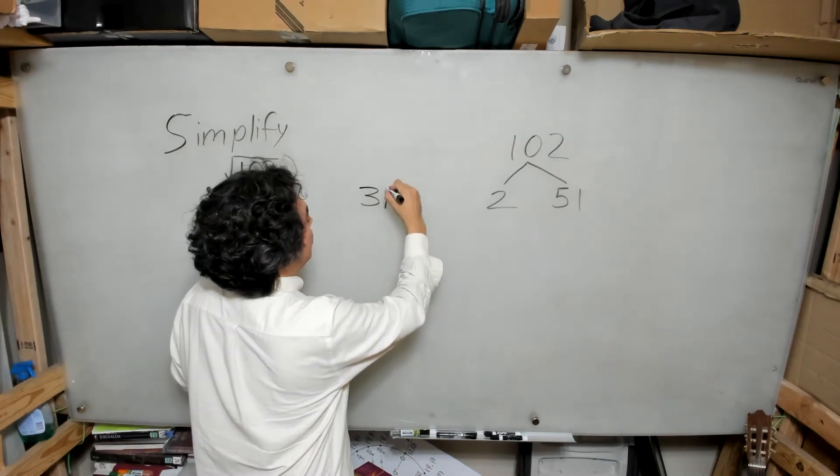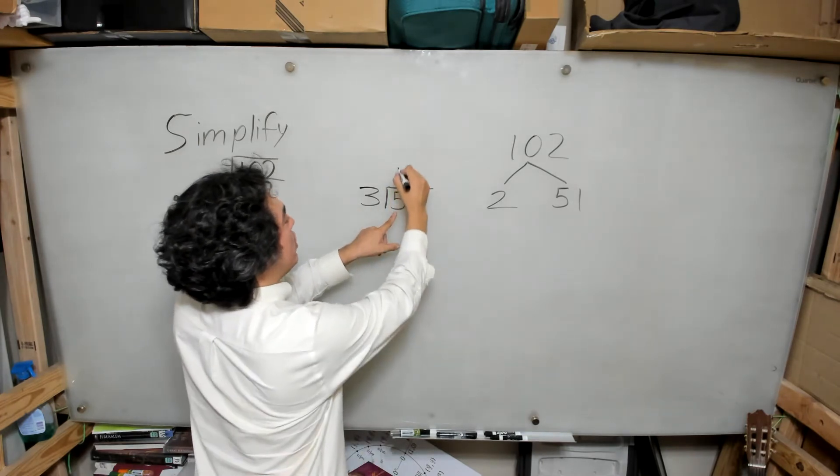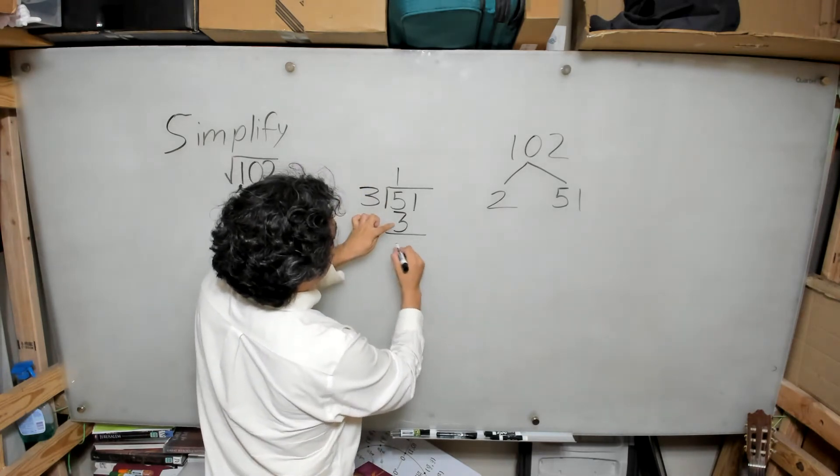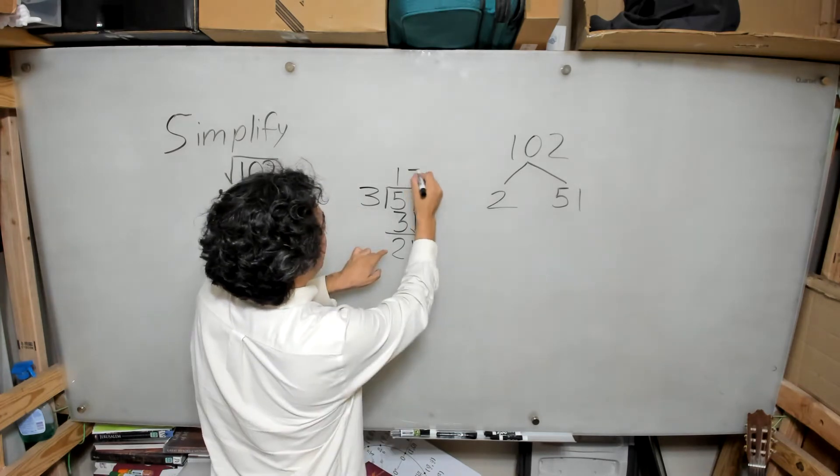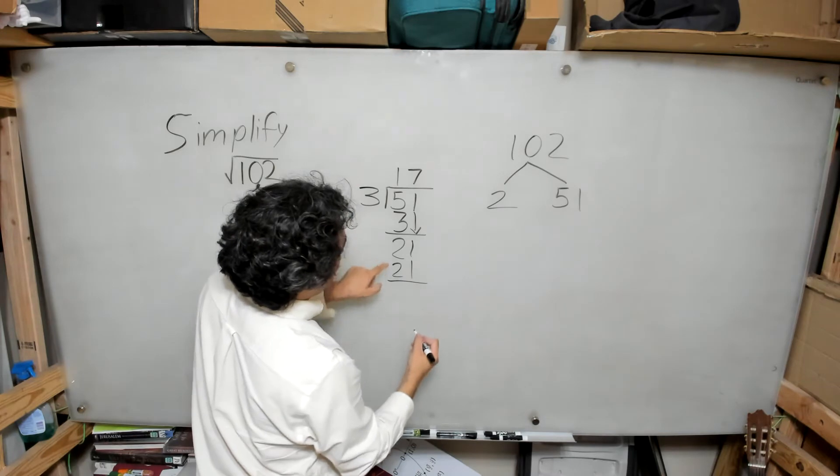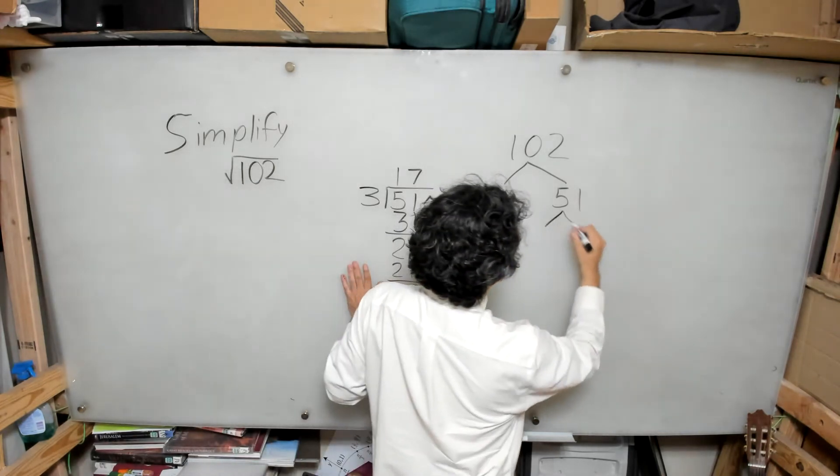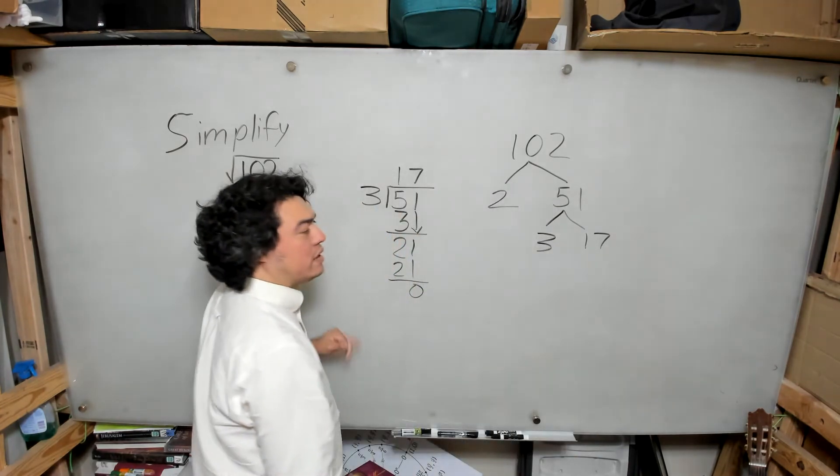And so what we're going to find is that if we divide 3 into 51, we're going to get a perfect division. 3 goes into 5 one time, 3 times 1 is 3. 5 minus 3 is 2. I bring down the 1. 3 goes into 21 seven times. 7 times 3 is 21, and 21 minus 21 is 0. So in fact, 51 can be seen as 3 times 17.